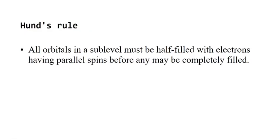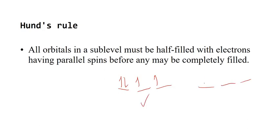Hund's rule says all orbitals in a sub-level must be half-filled with parallel spins before any may be completely filled. That means if you're in a P sub-shell with three orbitals, you must put one electron in each orbital with the same spin before pairing any electrons.